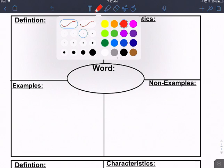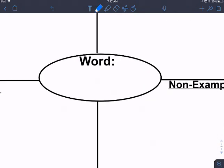So let's start by writing in what our word is, and our word is square.